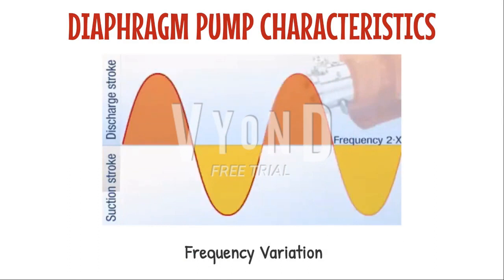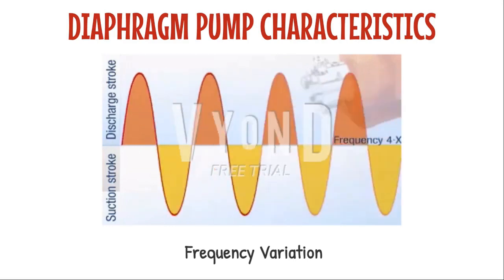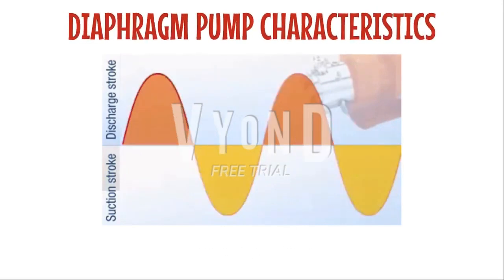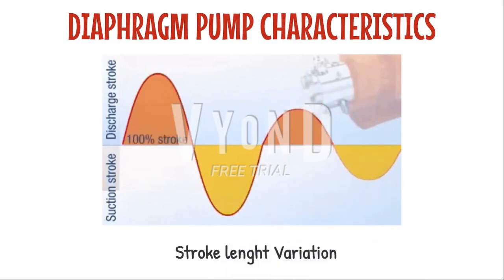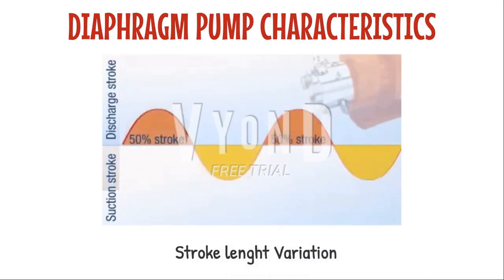The pump doesn't actually provide fluid for half of each shaft revolution. Increasing the motor speed increases the frequency of injection, and a high frequency is used for situations where good mixing is required. By adjusting the stroke length, precise flow control is also possible. By measuring flow at two stroke settings, graphing both locations, and drawing a straight line across them, other flow rates versus stroke may be predicted with accuracy.